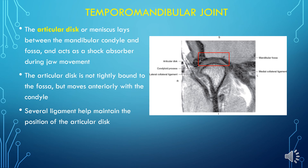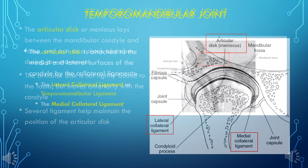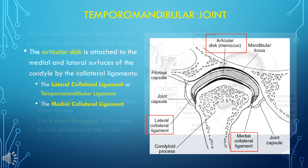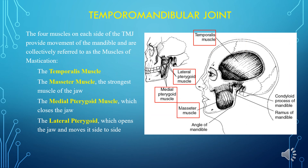Several ligaments help maintain the position of the articular disc. The articular disc is attached to the medial and lateral surfaces of the condyle by the collateral ligaments: the lateral collateral ligament or temporomandibular ligament, and the medial collateral ligament. The four muscles on each side of the TMJ are collectively the muscles of mastication: the temporalis muscle, the masseter muscle (the strongest muscle of the jaw), the medial pterygoid muscle which closes the jaw, and the lateral pterygoid which opens the jaw and moves it side to side.